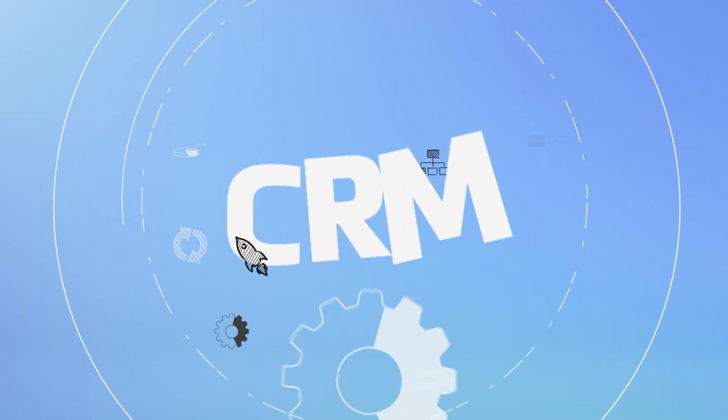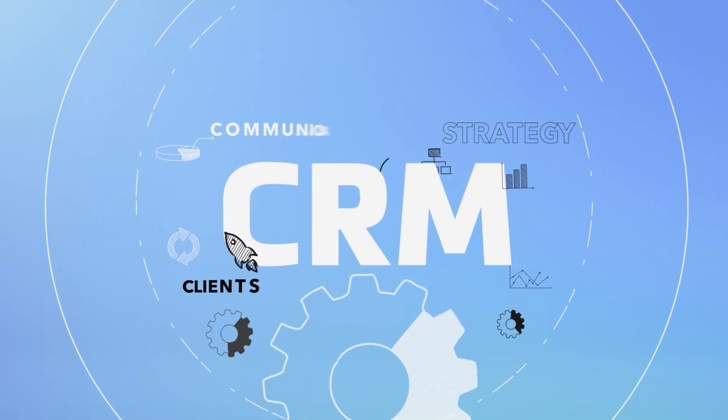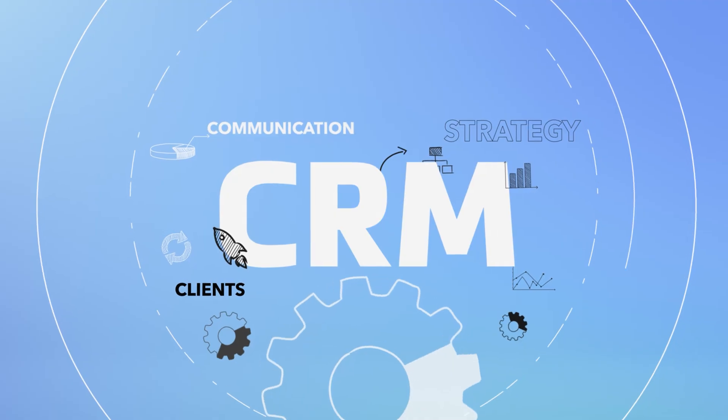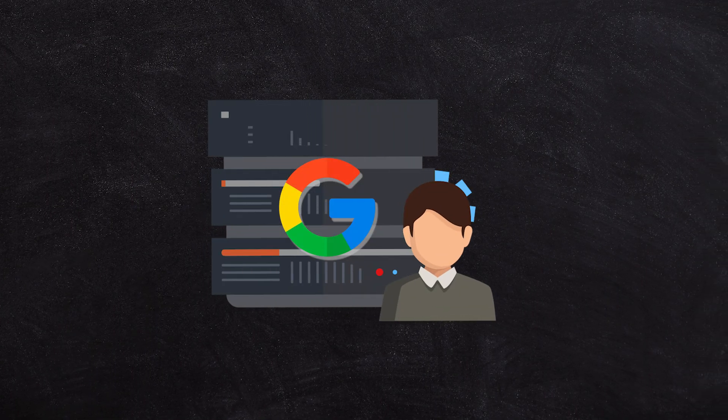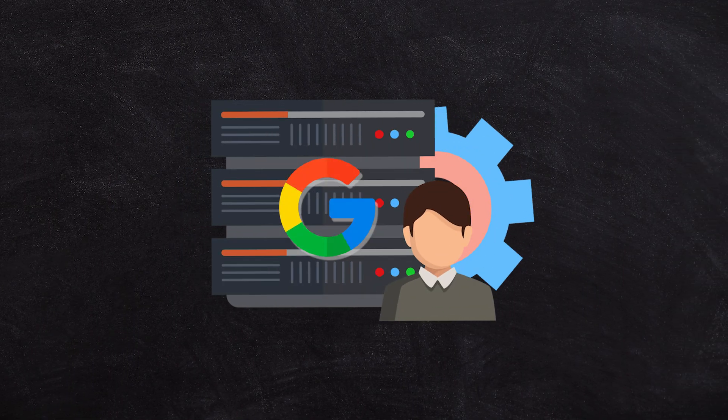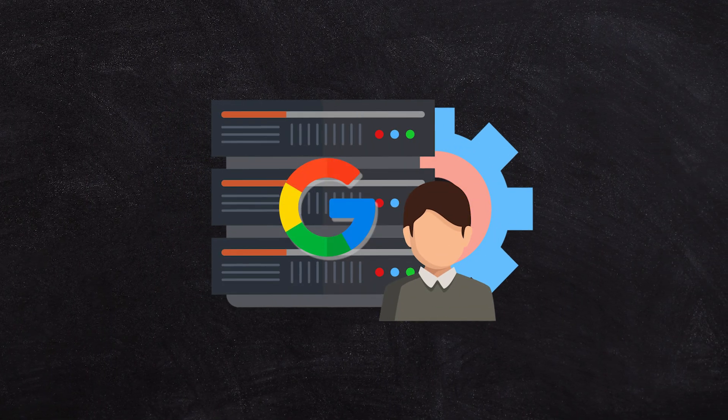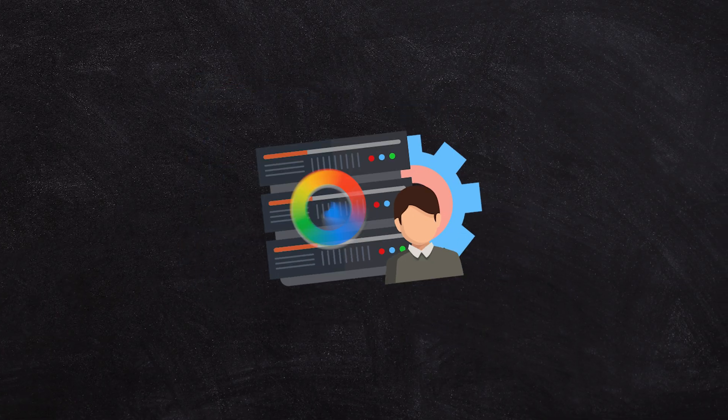The third level of sophistication is to use a CRM system of some sort, which takes your contacts from Google and automatically puts them into a shared database.